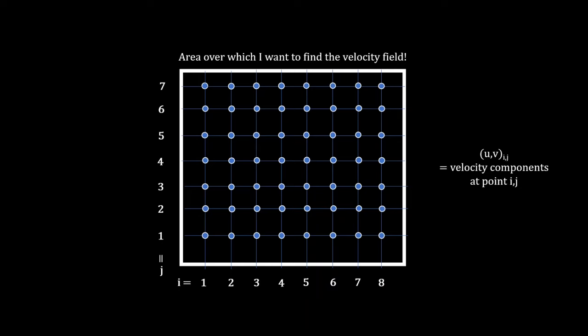Well, one method is computational fluid dynamics. A lot of such algorithms rely on discretization, where we simplify derivatives as the division of the change in two quantities between two discrete points in space. We can then construct a grid of points where we want to find our velocity field.